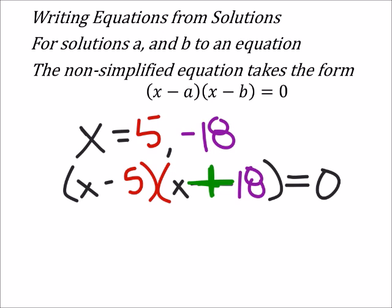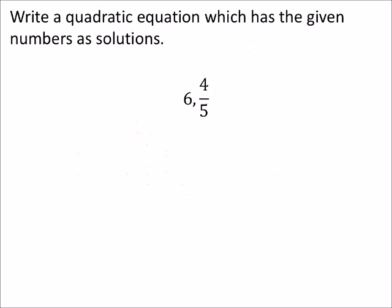So here are the two solutions, so we can write the two binomials that are being multiplied by each other. That would be kind of like it's been factored out. We'll use FOIL then to make it a quadratic equation.